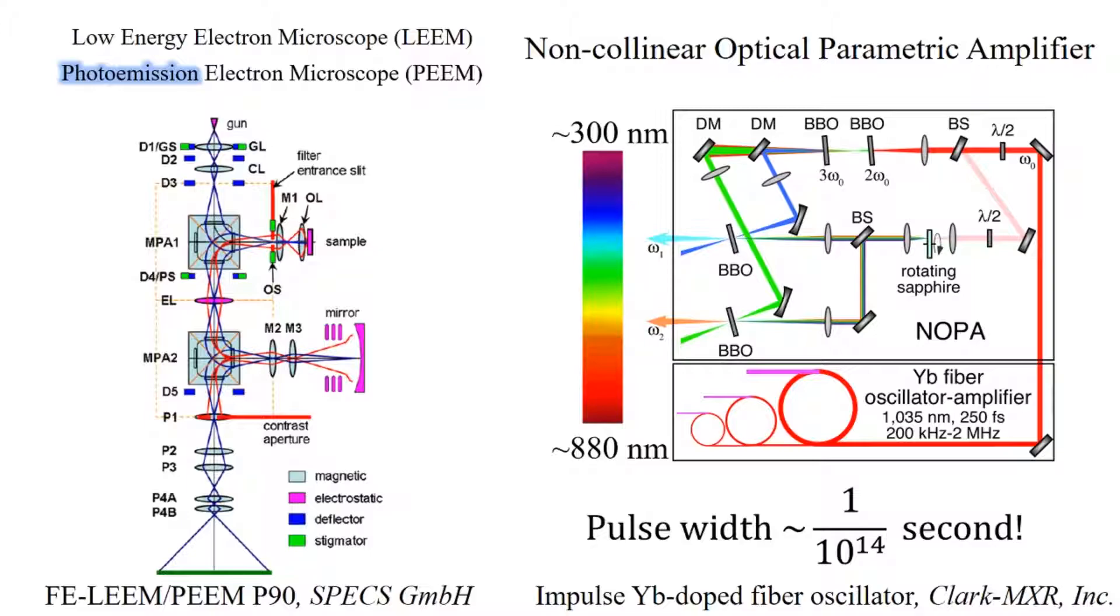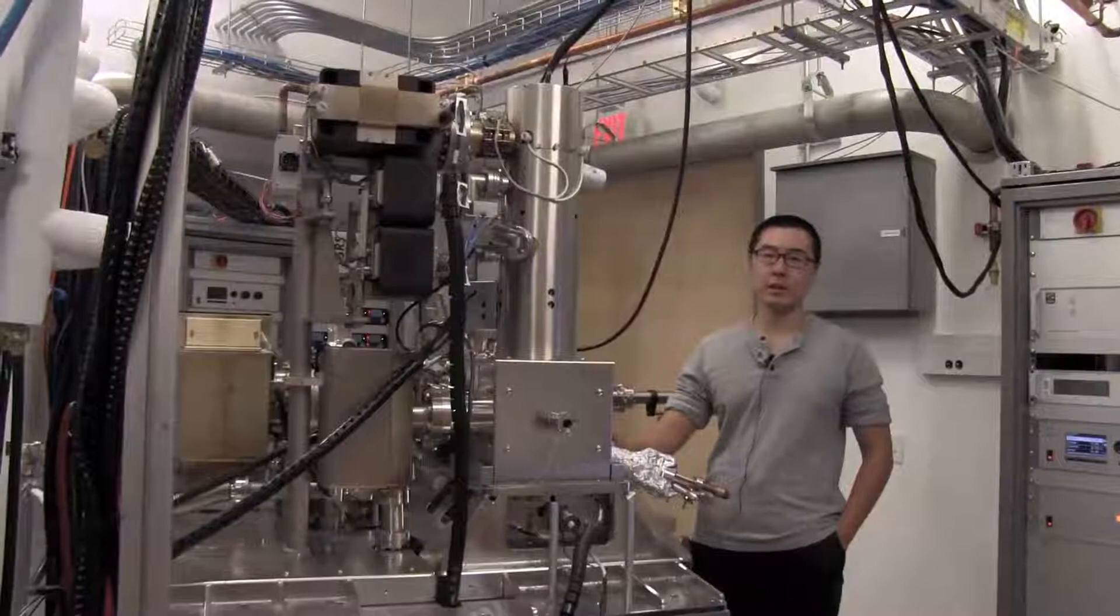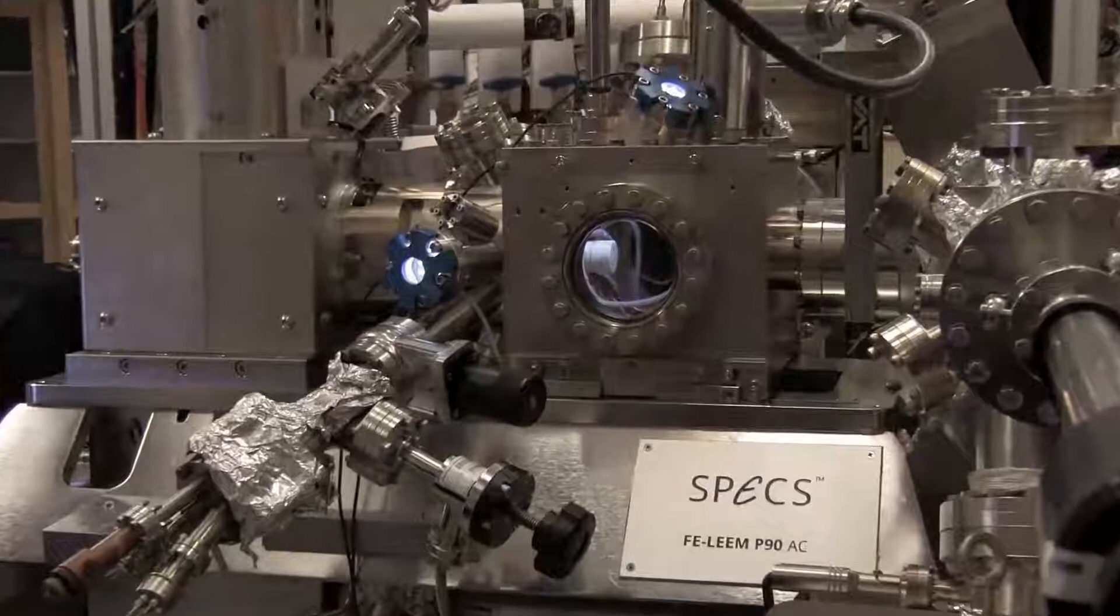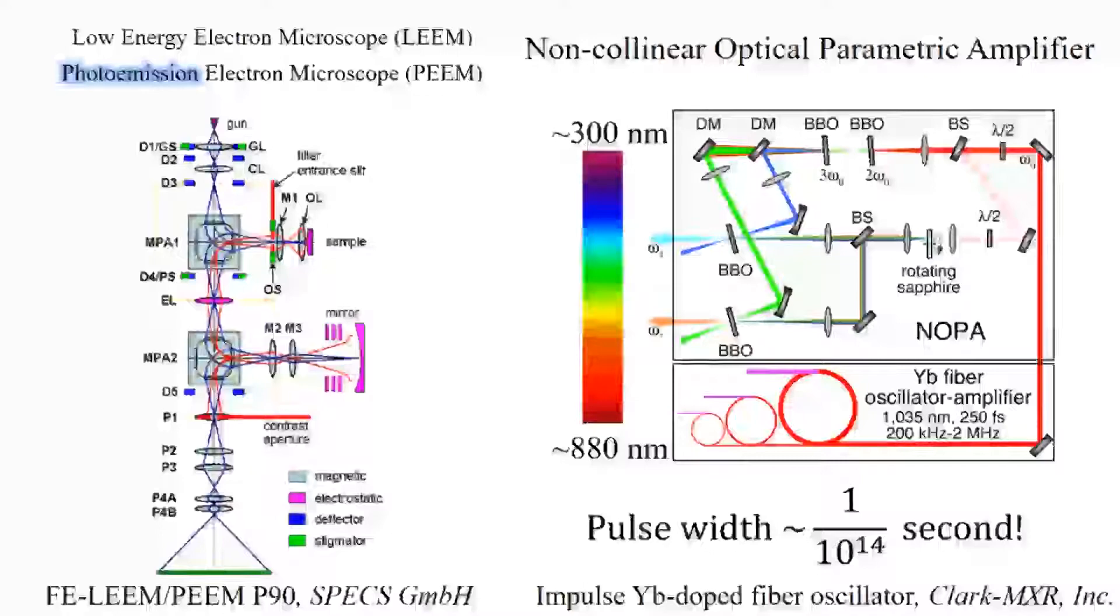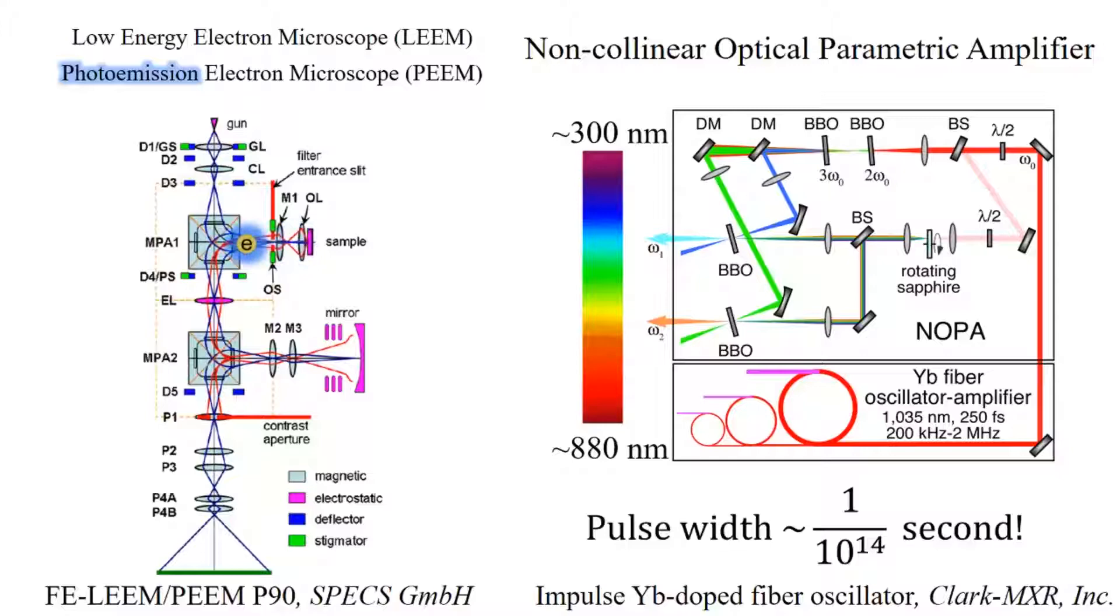In our lab, we employ an aberration-corrected low-energy electron microscope from SPECS in Germany, which also serves as a photoemission electron microscope to study plasmonic phenomena with nanometer spatial and femtosecond temporal resolution. In the LEEM mode, the reflected electrons from the sample form an image of the surface topography, while in PEEM mode, photoelectrons generated by ultra-short pulses form an image of the surface polarization field.